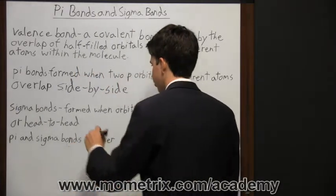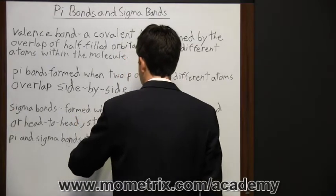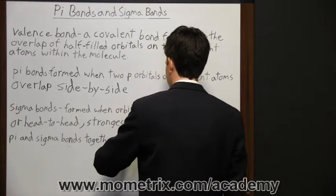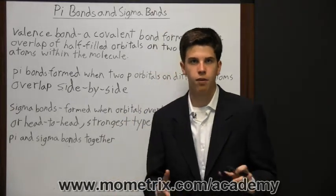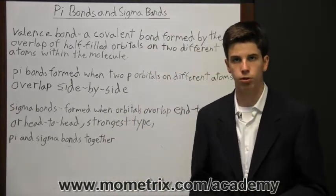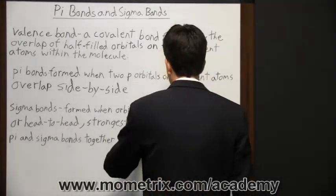Sigma bonds are the strongest type of covalent bonds. And the reason for that is because of the maximum overlap of the orbitals involved.